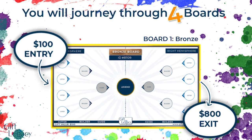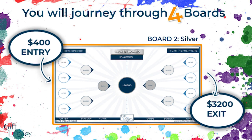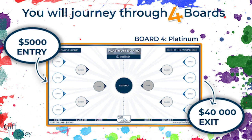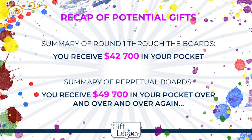The gift value increases from $100 on Bronze, to $400 on Silver, then $1,600 on Gold, and $5,000 on Platinum. This means that when you complete your full first cycle you will have $42,700 in gifts in your pocket. And a full cycle on perpetual will mean $49,700 in your pocket over and over again.